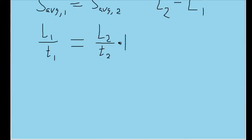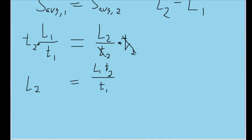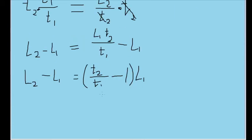First, we multiply both sides by T₂ to get L₂ on its own. Then, we subtract L₁ from both sides so that we can get what we're looking for. We can also simplify this slightly by factoring out L₁. We now have a pretty good expression for the difference in track lengths. All that's left to do is plug in our time values.